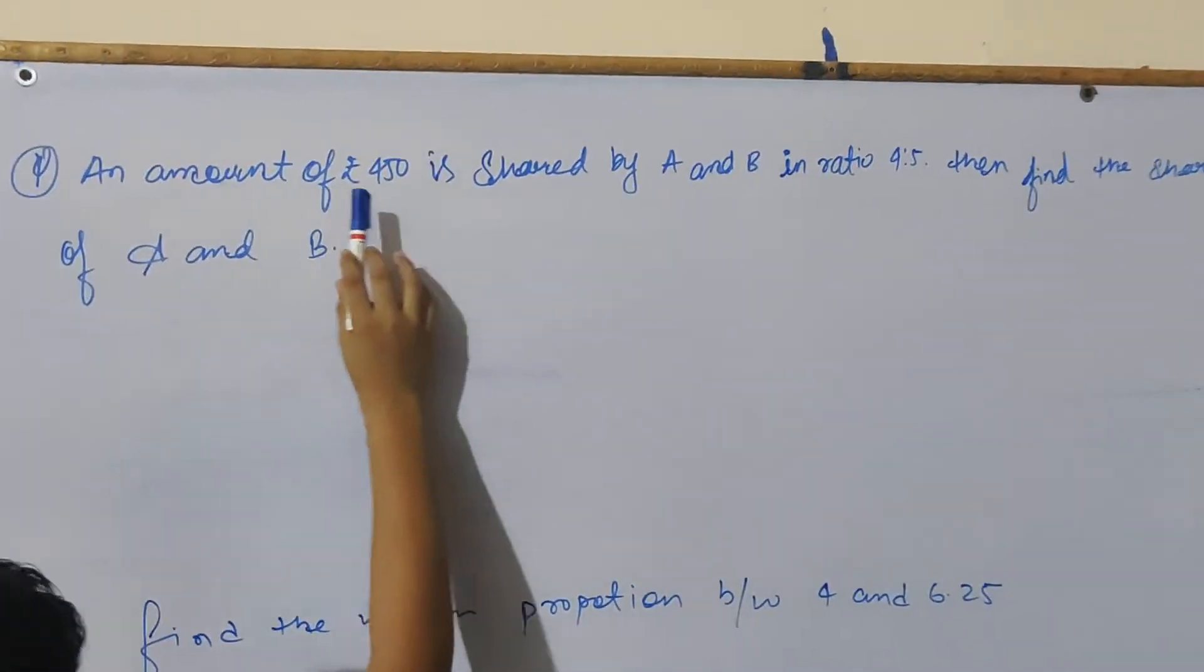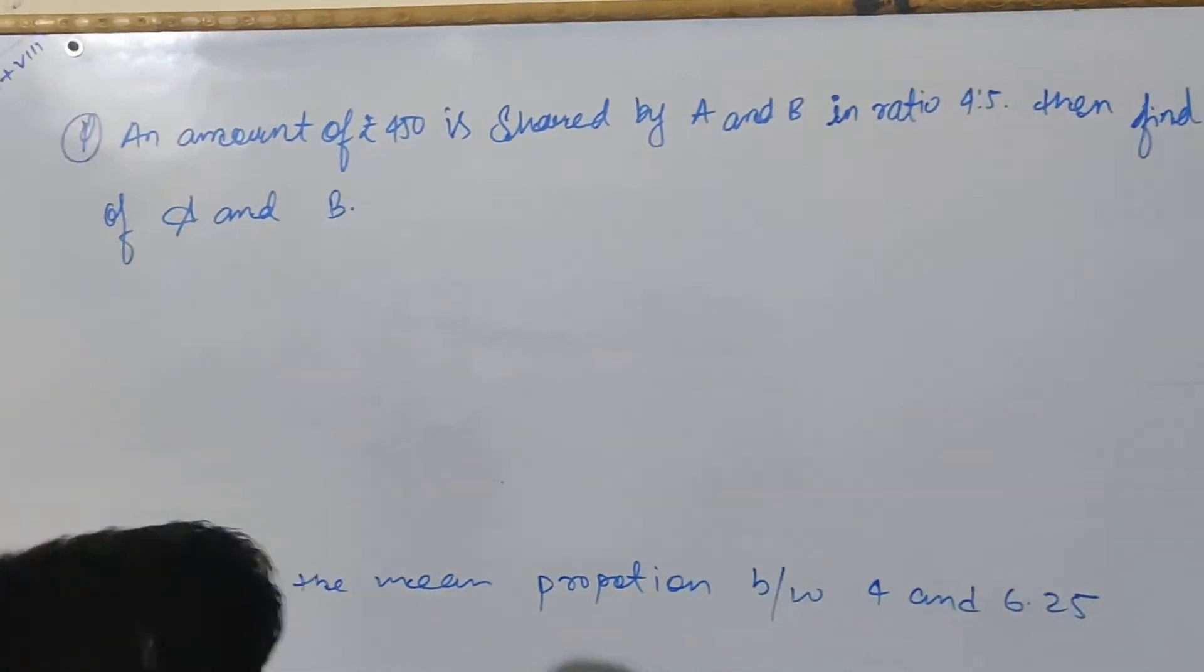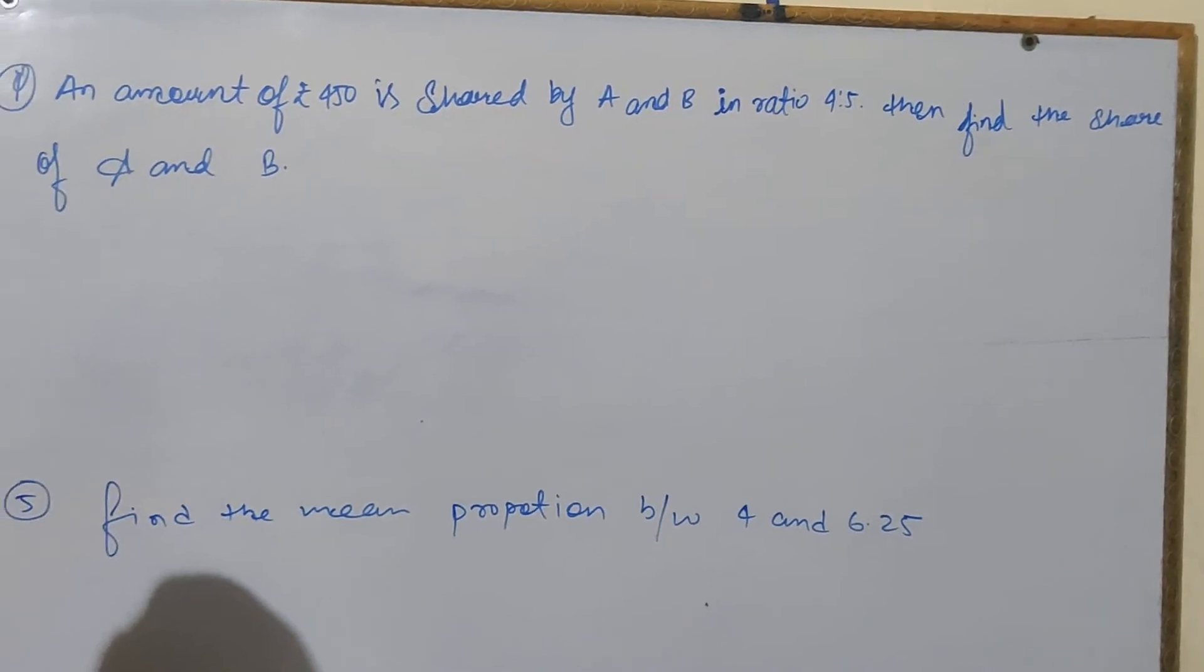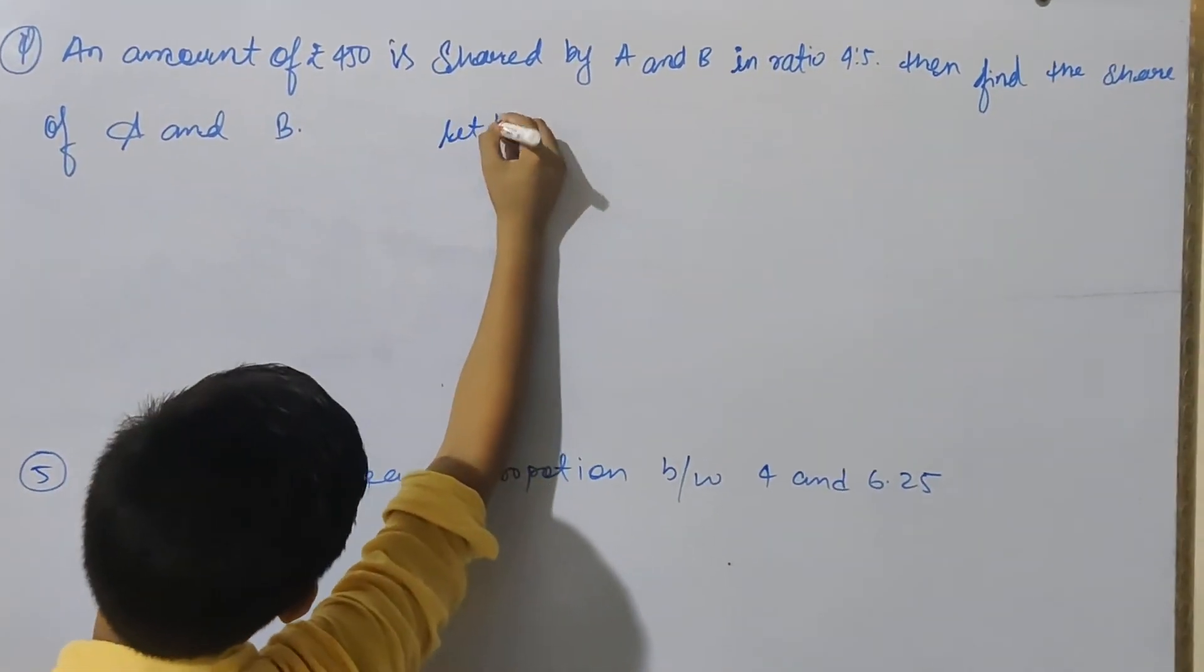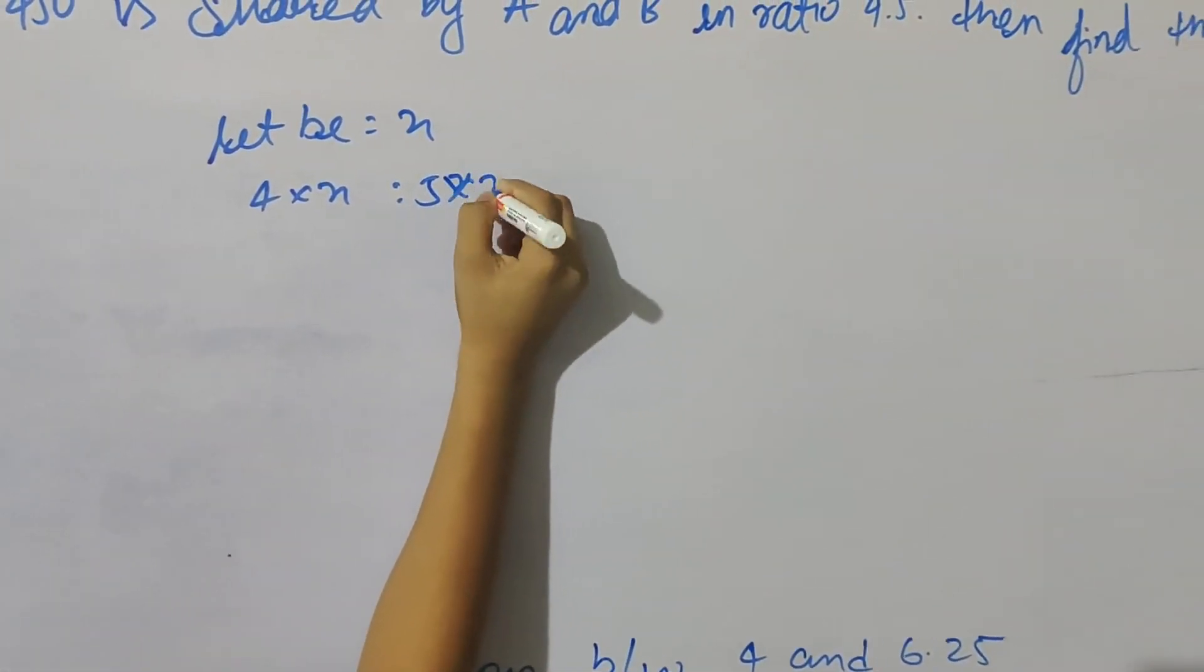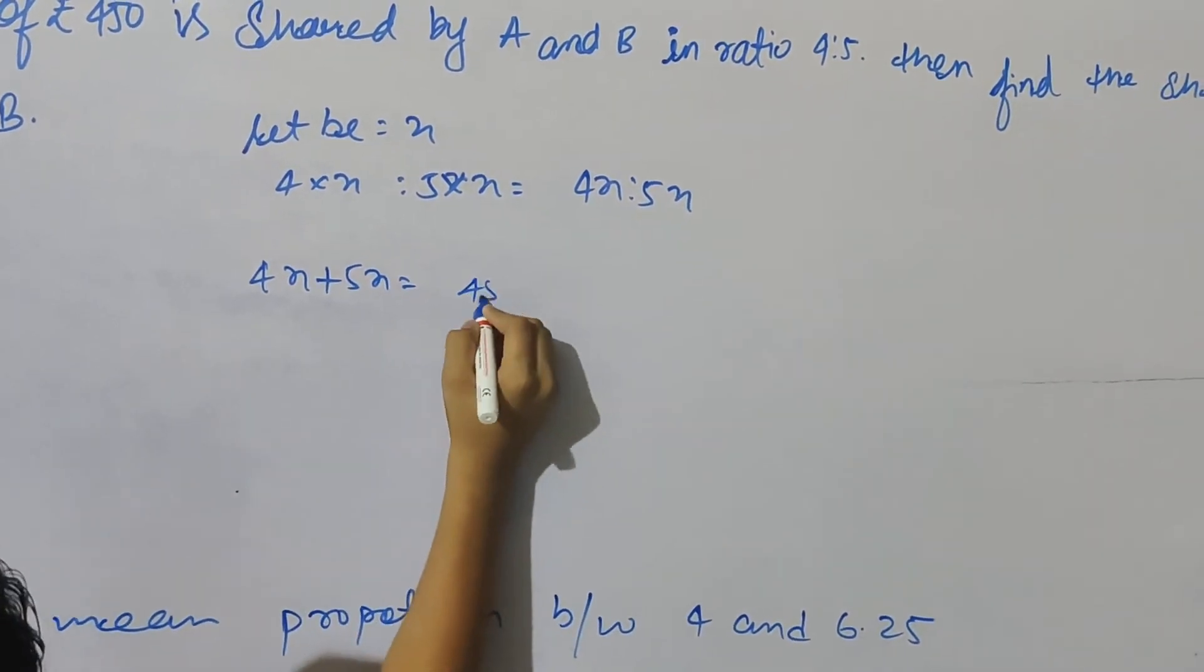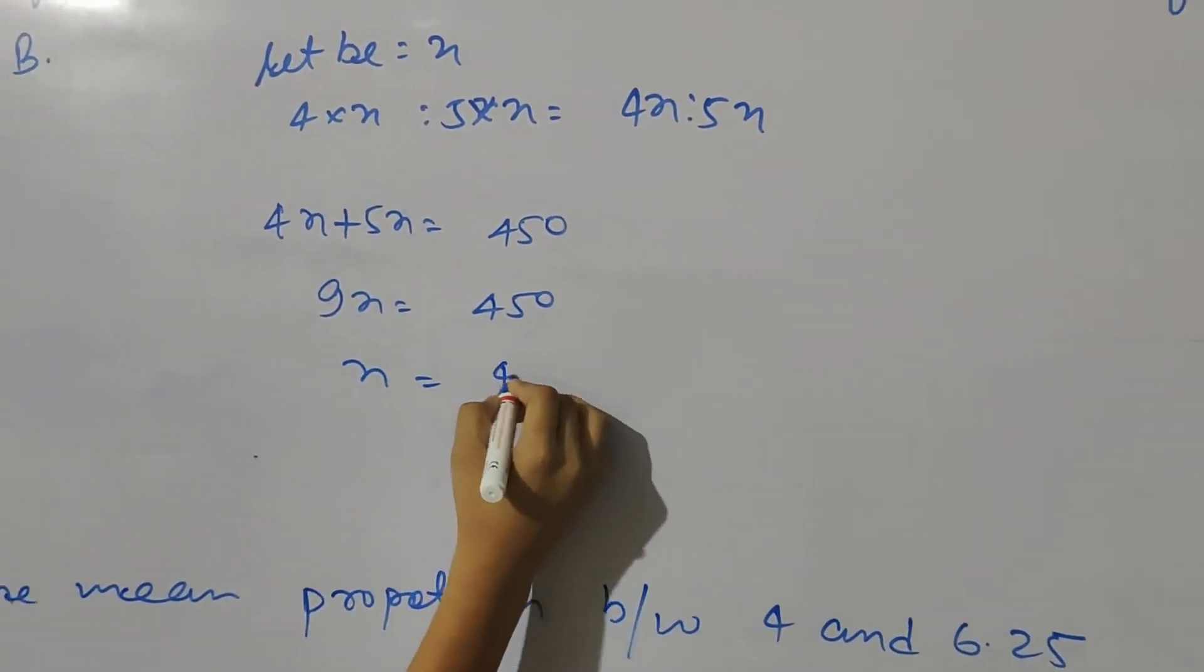Question 4: An amount of rupees 450 is shared by A and B in ratio 4:5. Find the share of A and B. Let A be 4x and B be 5x. So 4x plus 5x equals 450. Therefore 9x equals 450.